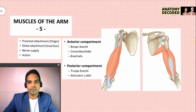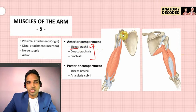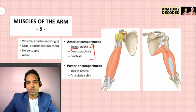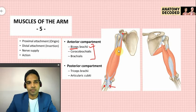Now let's cover the muscles of the arm. There are five muscles: three in the anterior compartment and two in the posterior compartment. Biceps brachii has two heads — the short head arises from the tip of the coracoid process along with coracobrachialis, and the long head arises from the supraglenoid tubercle with an intracapsular origin. Distal attachment is the radial tuberosity (rough posterior aspect) and the bicipital aponeurosis, which fuses with the deep fascia of the forearm. Nerve supply of all three anterior compartment muscles is the musculocutaneous nerve, root value C5, C6, and C7 from the lateral cord of the brachial plexus.